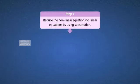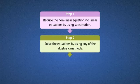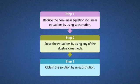You can convert a pair of non-linear equations in two variables to linear equations by following these three steps. Step 1: Reduce the non-linear equation to a linear equation by using substitution. Step 2: Solve the equations by using any of the algebraic methods. Step 3: Obtain the solution by resubstitution.